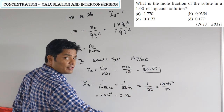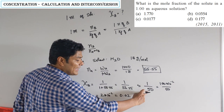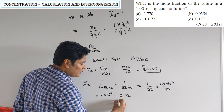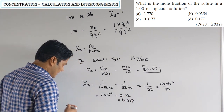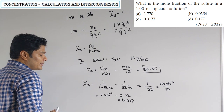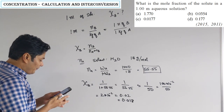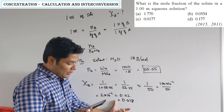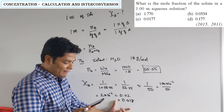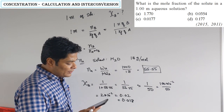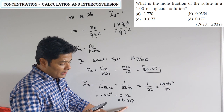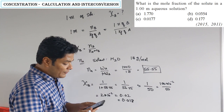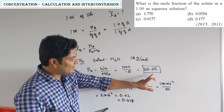The answer is slightly less than 0.02. Looking at the answer options: A is 1.77 — wrong, mole fraction is never more than 1. B is 0.0354, C is 0.0177, D is 0.177. This question has been asked in both 2011 and 2015 and appears in many competitive exams.